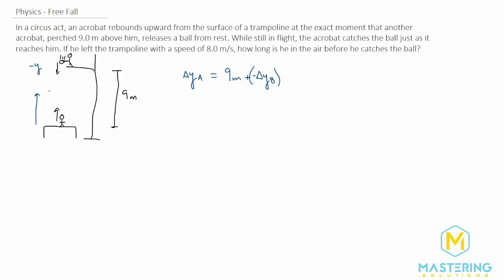So however far it falls down, that distance 9 meters minus it will be the exact same as how far up the acrobat goes. That took me a few minutes to wrap my brain around, but once you do it makes sense. All it is is however far he goes up and 9 minus however far the ball goes down is where they will meet.